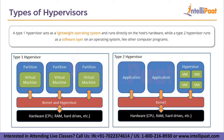Bare metal (Type 1) hypervisors are typically faster and more efficient because they have direct access to the underlying hardware and do not need to go through an operating system layer. Hosted (Type 2) hypervisors are significantly easier to set up — you simply install the software and you're ready to go, making them more user-friendly. Type 1 hypervisors require more complex installation steps, but once running they are faster than Type 2.